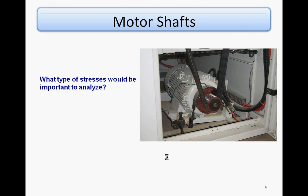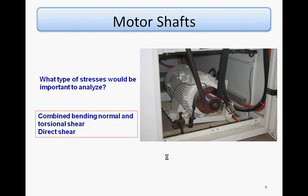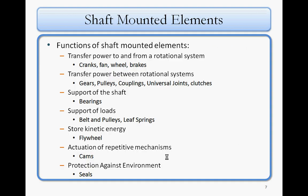Here's a similar structure — it's a motor having an overhang shaft driving a belt. The belt will have a tension force on it. Similarly, the shaft will have a torsional shear stress and a bending normal stress. You can also include direct shear — that's very similar to the previous slide.